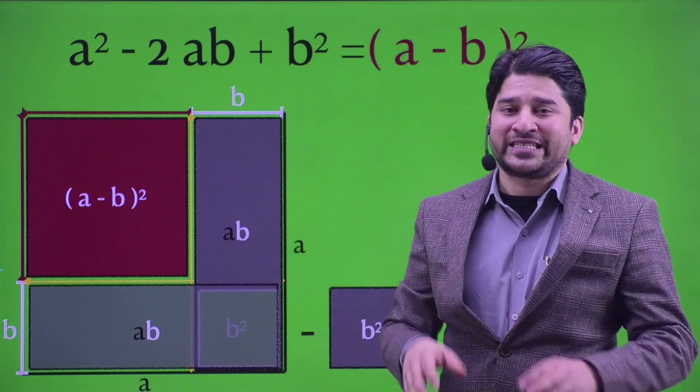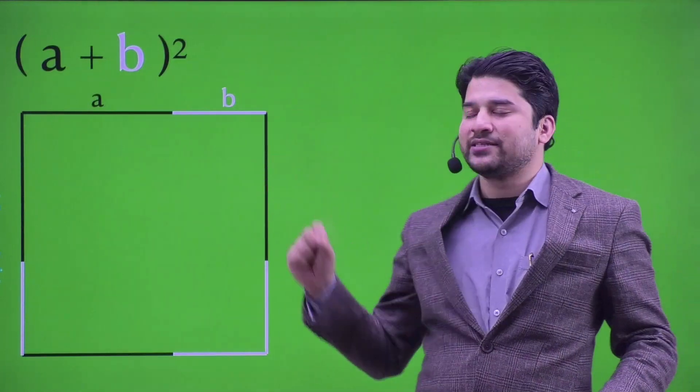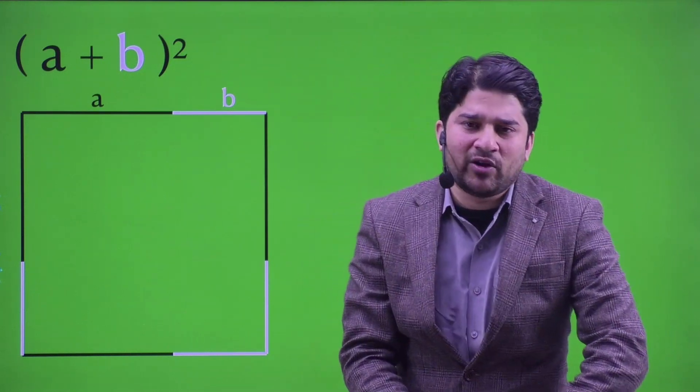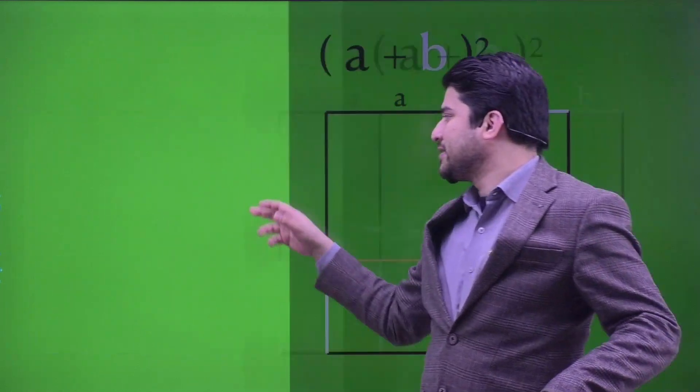Now we are going to move to the second method — understanding (a minus b) whole square in the light of (a plus b) whole square. I am sure most of you must be knowing what exactly (a plus b) whole square is. Let me give you a quick visualization. You have two line segments: black represents length a and white represents length b. Combining them together you have a plus b. I want you to build a square of side (a plus b), something like this. The area of this square is (a plus b) into (a plus b), which is (a plus b) whole square. Now I want you to join the junctions, something like this.